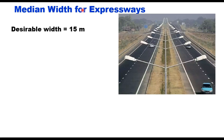Next is median width for expressways. Only depressed median will be provided on expressways; no raised median or curved median is permitted. The desirable width of the depressed median shall be 15 meters between the outside edge of the inside shoulder of the two carriageways. It should slope down towards the median center at a slope of 6 horizontal to 1 vertical, which will result in a V-shaped ditch acting as a median drain.